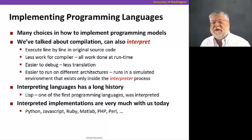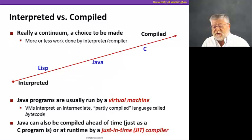Interpreted languages have a long, long history. Actually, one of the first programming languages called Lisp was an interpreted language. And there's still many interpreted implementations very much with us today. Not only Java, but also Python, JavaScript, Ruby, Matlab. A lot of languages you might have heard of mentioned.